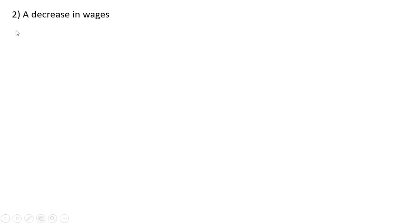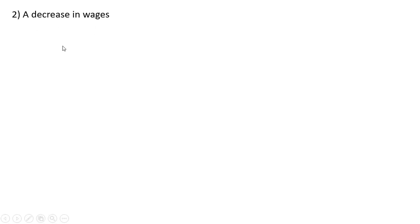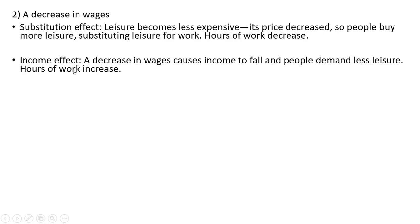Let's go through an example with a decrease in wages. With a decrease in wages, leisure becomes less expensive. Its price decreased, so people buy more leisure, substituting leisure for work — hours of work will decrease. With the income effect, a decrease in wages causes income to fall, and people will demand less leisure, so hours of work increase.